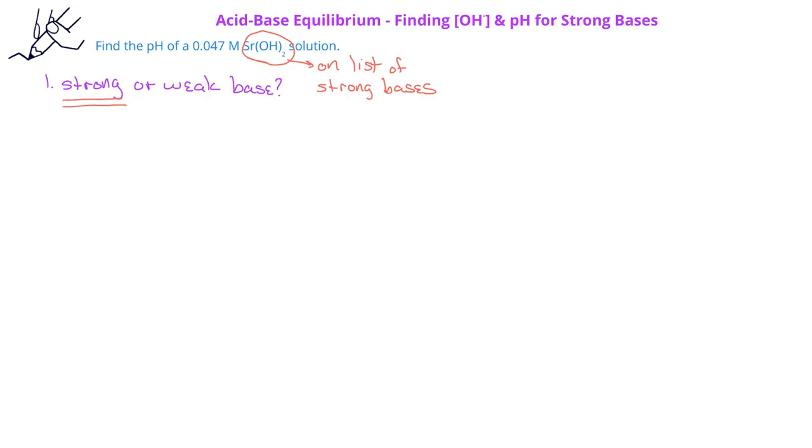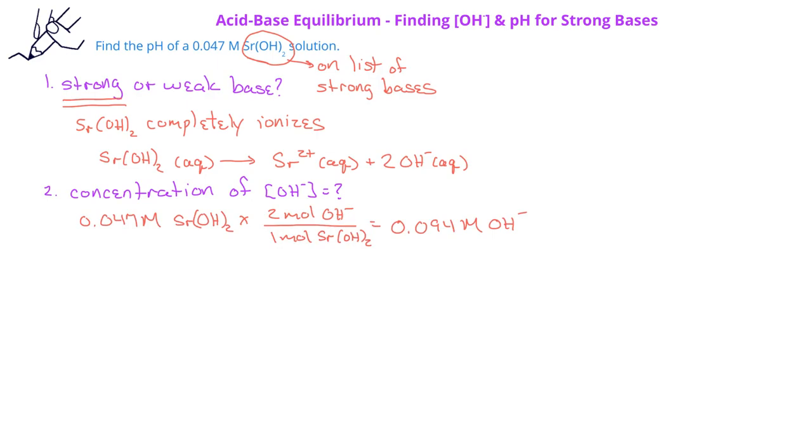As a result, we know that strontium hydroxide completely ionizes and therefore, the concentration of hydroxide is going to be twice the concentration of the strontium hydroxide. So if we have 0.047 molar strontium hydroxide, we would multiply that by the mole ratio, two moles of hydroxide for one mole of strontium hydroxide, and we would find that at equilibrium, we have 0.094 molar hydroxide ions.